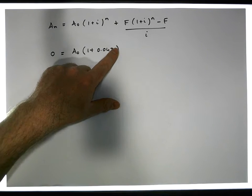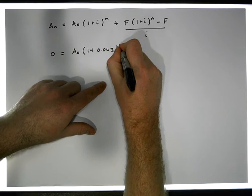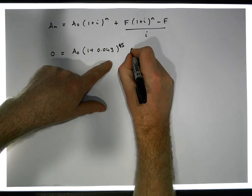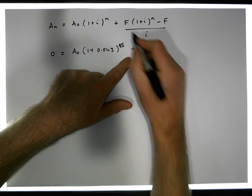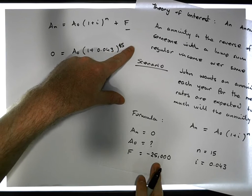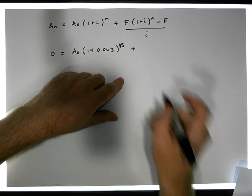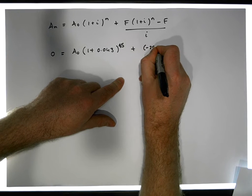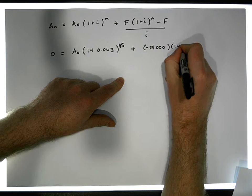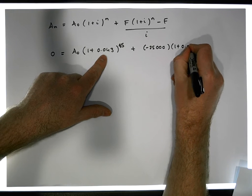Plus, let's just be careful here, it's plus F which is minus 25,000 euros, times (1 + i) which is 0.043 raised to the power of n which is 15, minus the 25,000 euros again, minus the 25,000 euros divided by i which is 0.043.